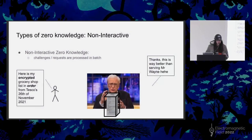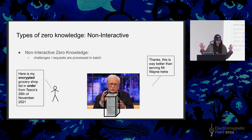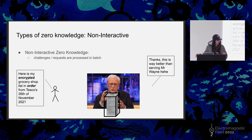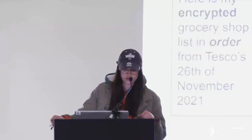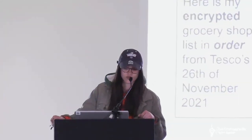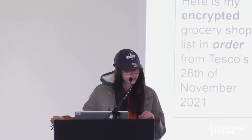The other type of Zero Knowledge is non-interactive. In this case, the challenges and requests are processed in a batch. So instead of Stigman Bruce giving him a list of what items were, he's just going to hand him an encrypted grocery list from Tesco's. And Alfred is going to be also very interested in reading that.